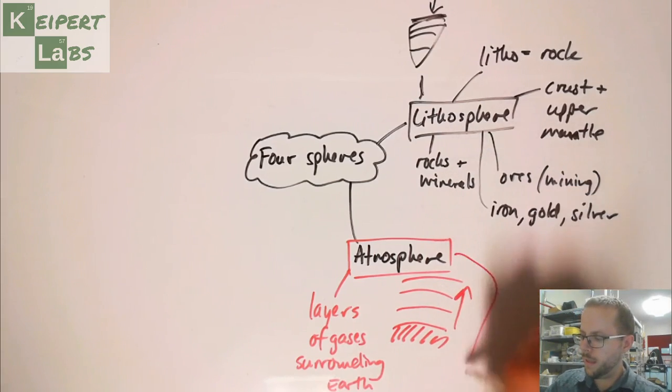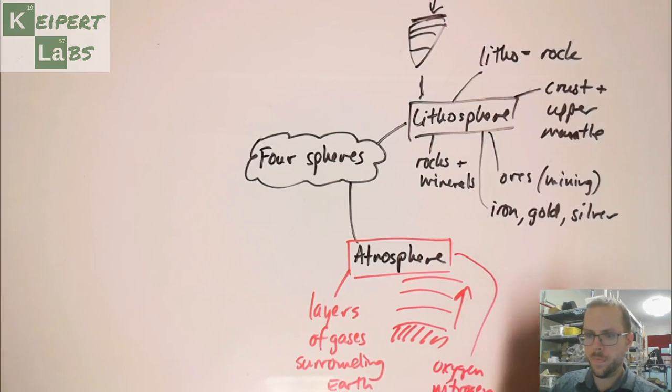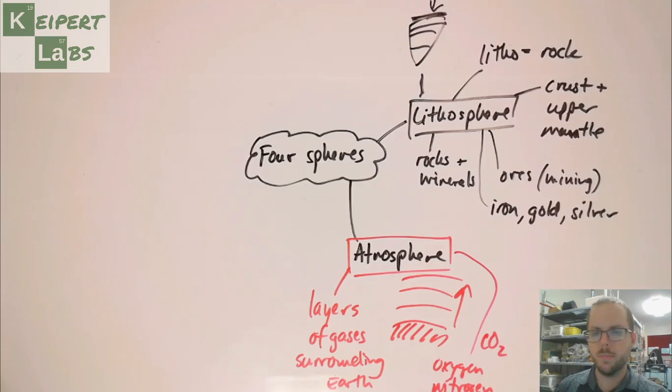So some of the gases that we're thinking about say oxygen, we're thinking about nitrogen. We might be thinking CO2. Some of those sorts of different things are what we care about in that part of our sphere.